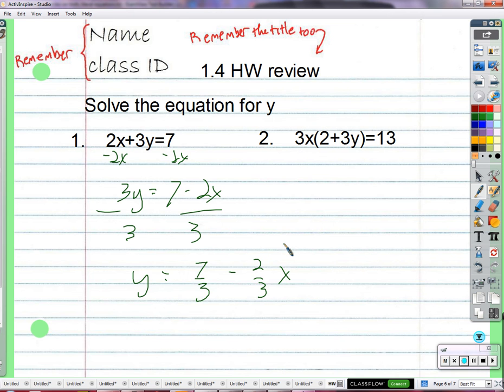3x times 2, so that would be 6x. 3x times 3y. This should be adding. We can clean this up. We can say it is 3 times 3 is 9 times x times y. 6x plus 9xy equals 13.